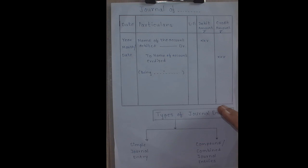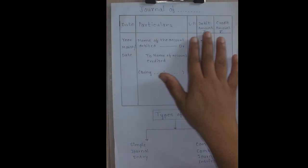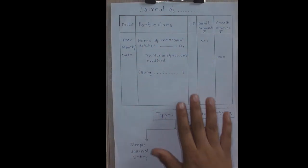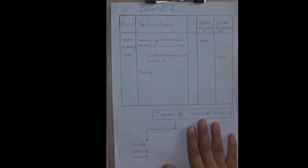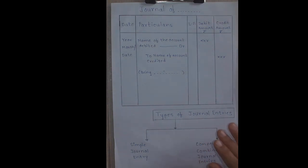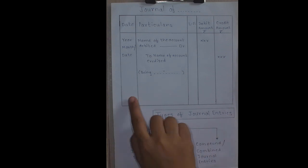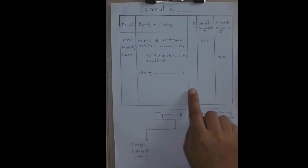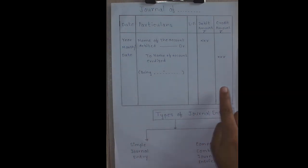So let us see the format, or ruling, or pro forma, or specimen of journal that is given here. Now I am going to explain each column of that journal.